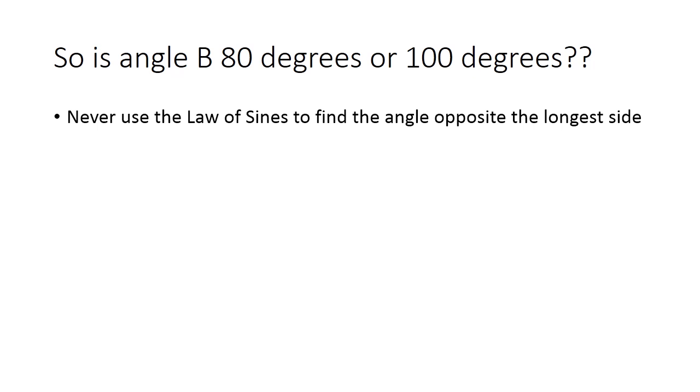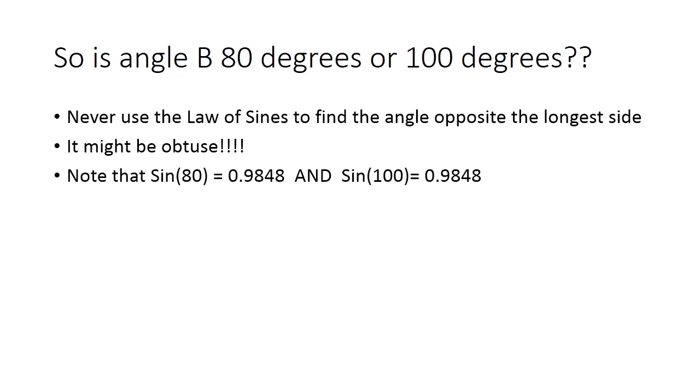Never use the law of sines to find the angle opposite the longest side. Why? Because the angle opposite the longest side in a triangle might be obtuse. Triangles are only allowed at most one obtuse angle. And if it has one, it will be opposite the longest side. Now, why does the law of sines have problems with that?